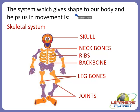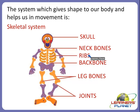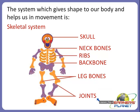Another system is the skeletal system, which gives shape to our body and helps us in movement. The skeletal system includes the skull, neck bones, ribs, backbone, leg bones, and joints. We will discuss about the skeletal system in detail in the next session.